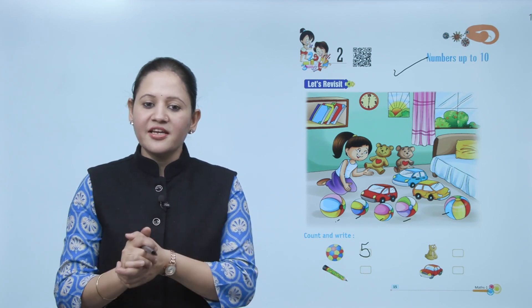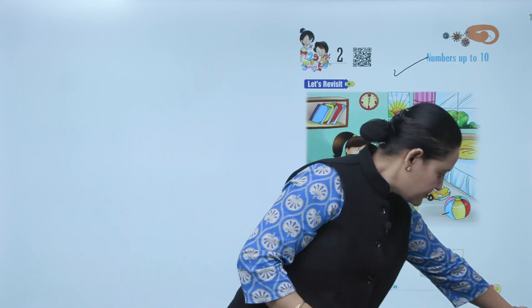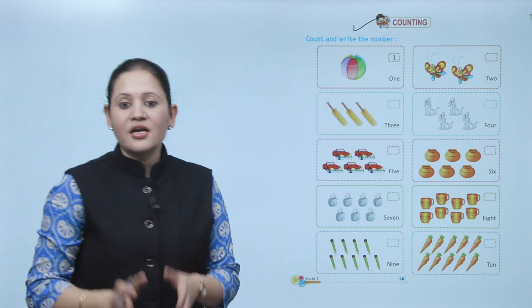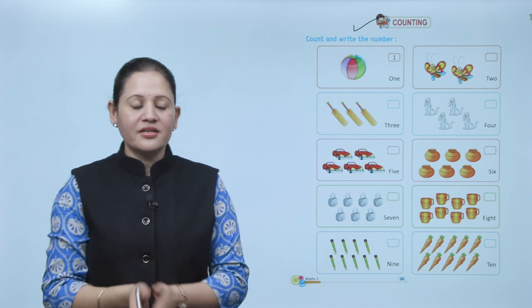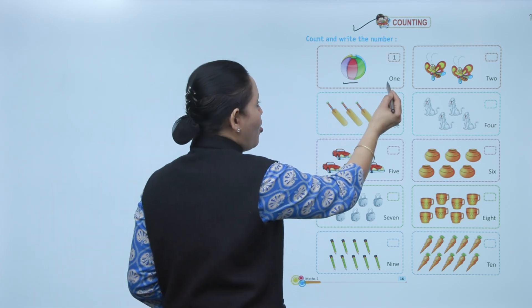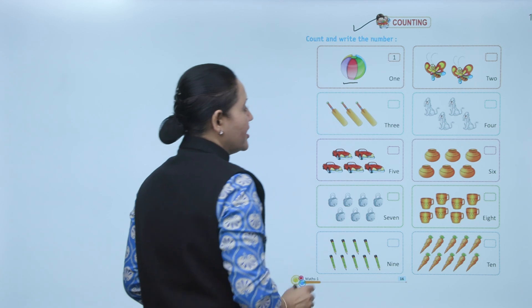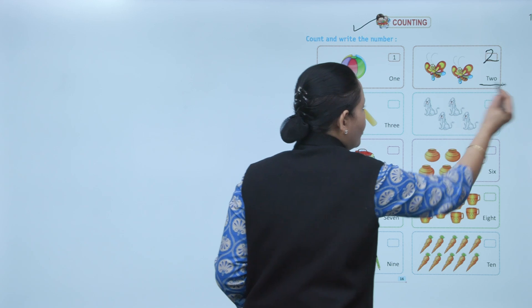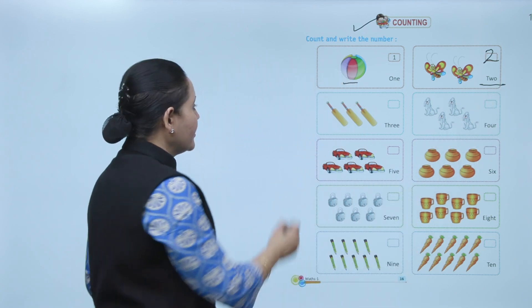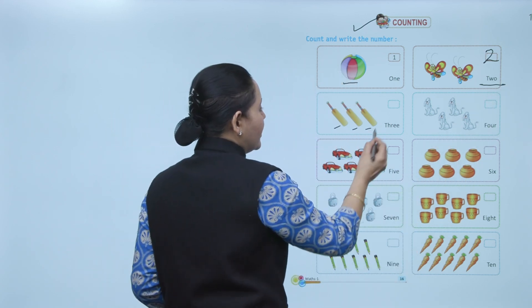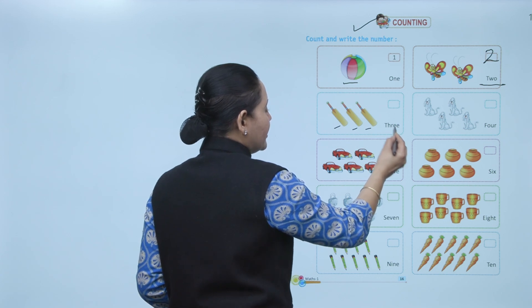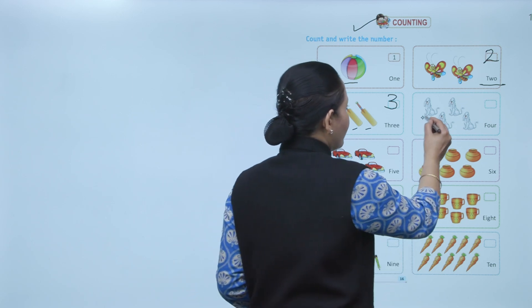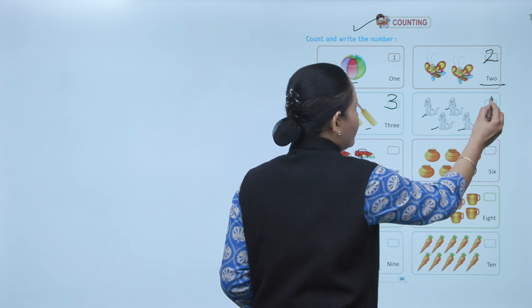Count the object and write their number. How many balls? One — so write here: one. Then two butterflies, so write here: number two, T-W-O, two. Three beds — one, two, three — T-H-R-E-E, three, so write number three.